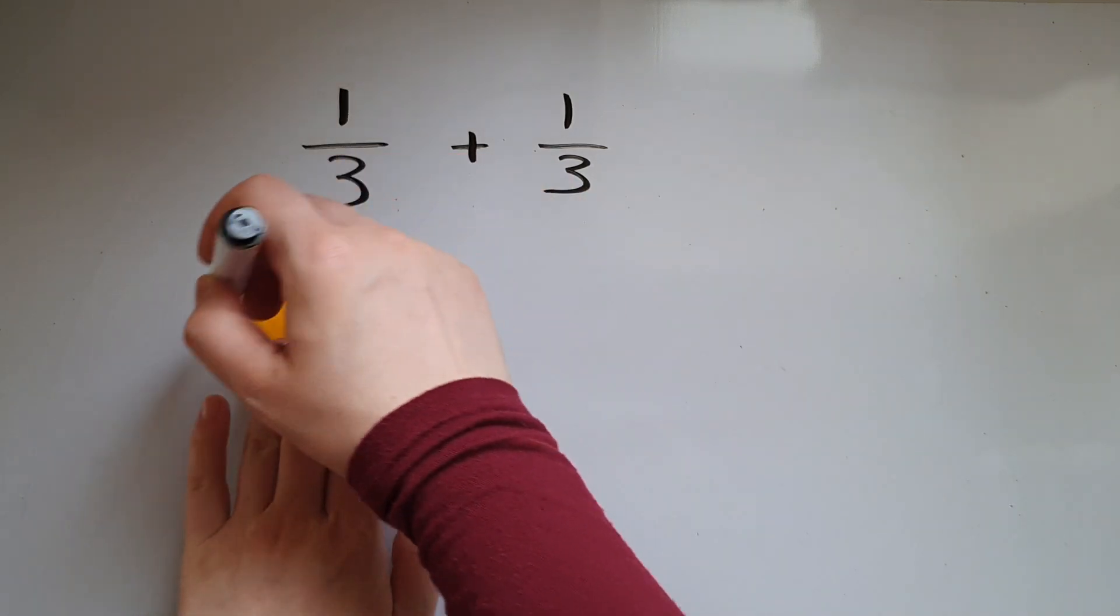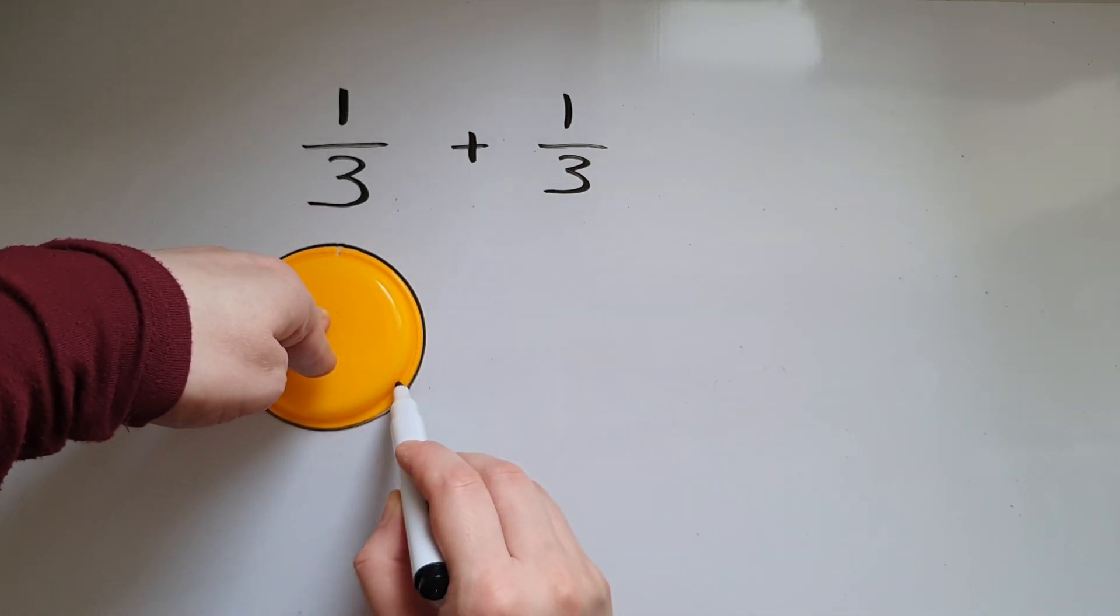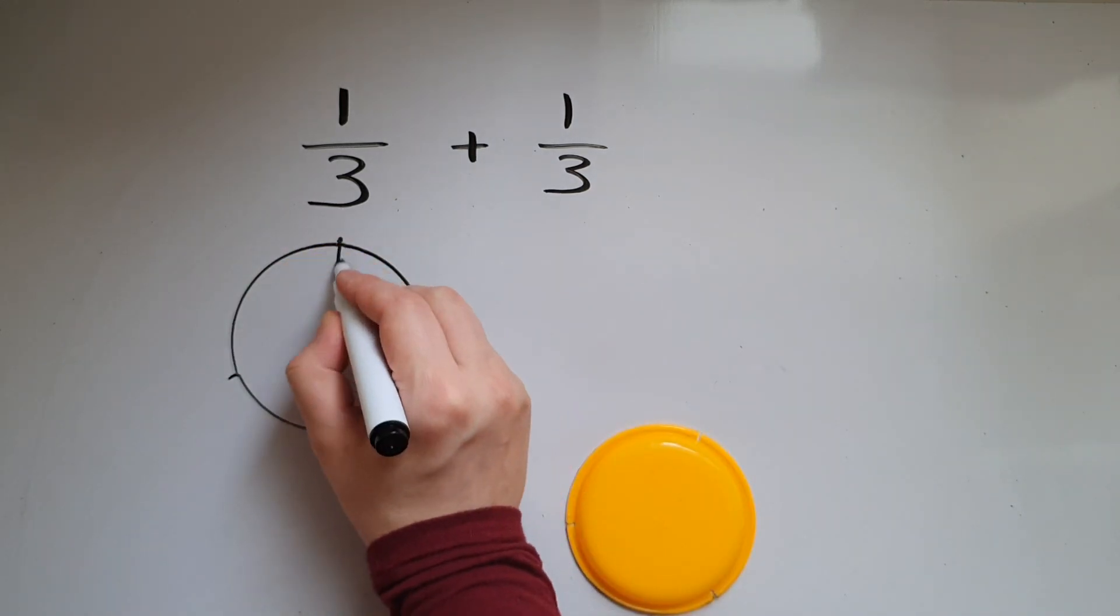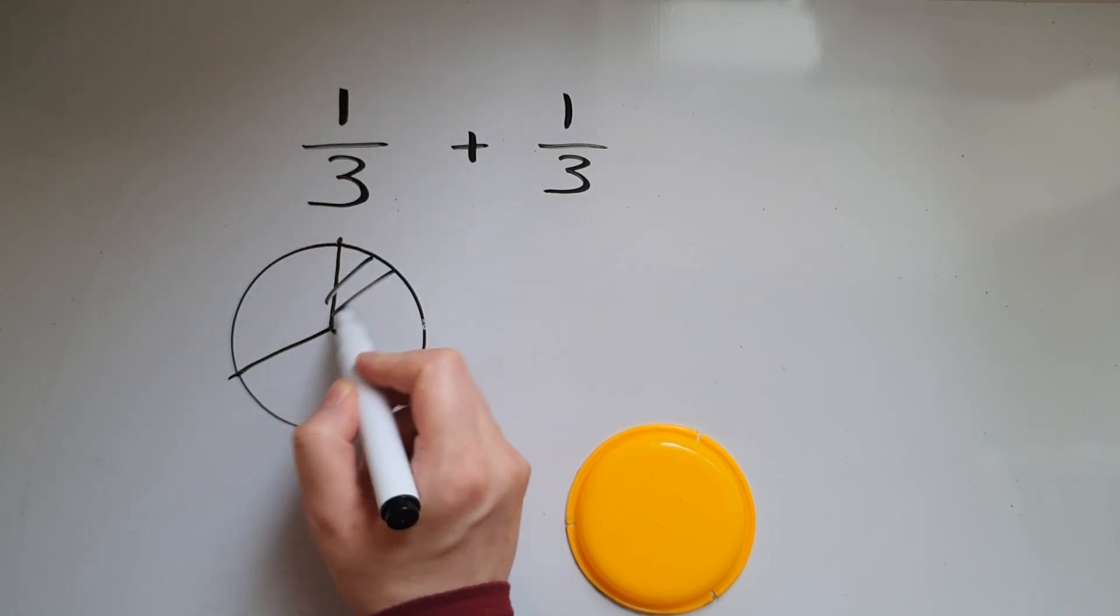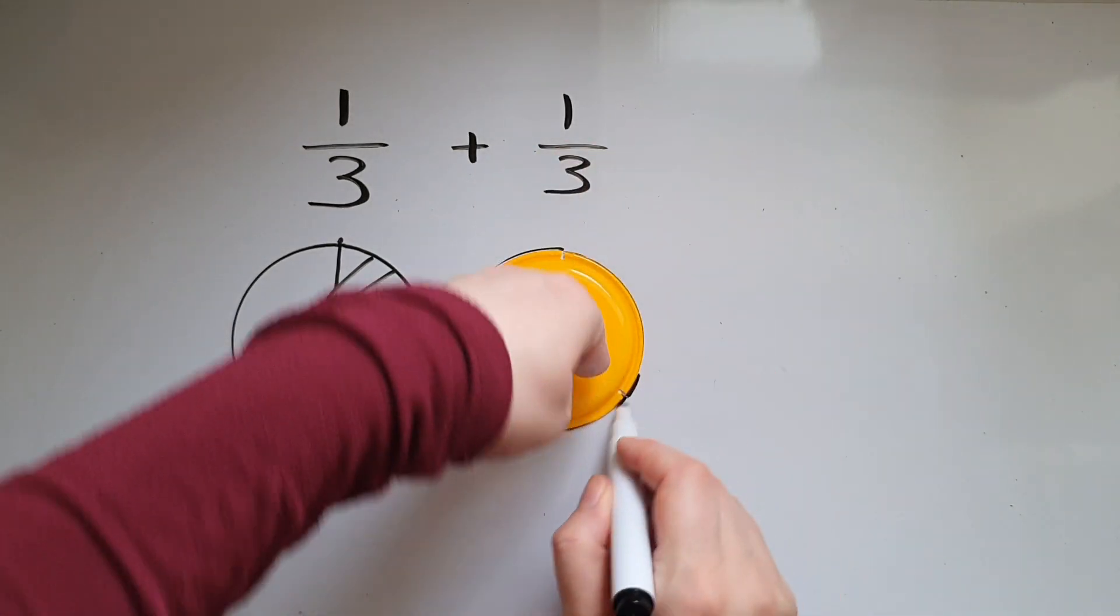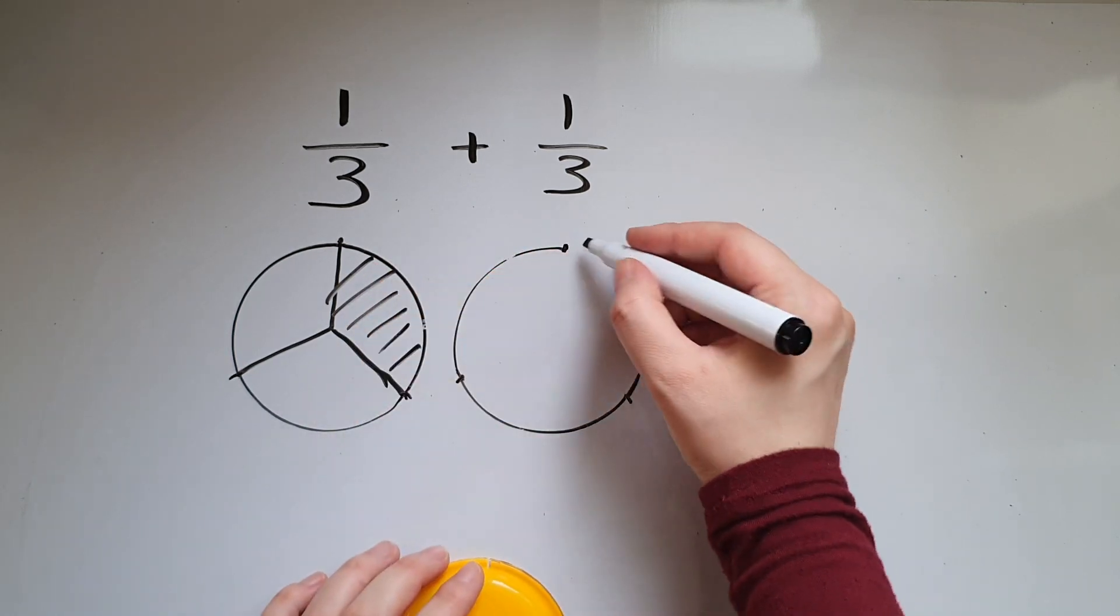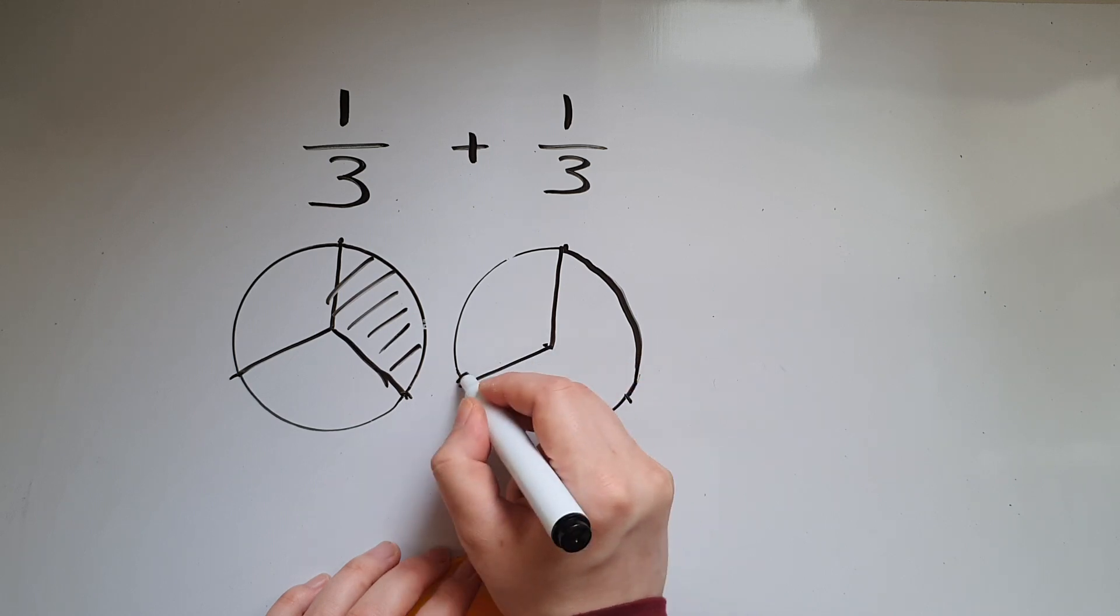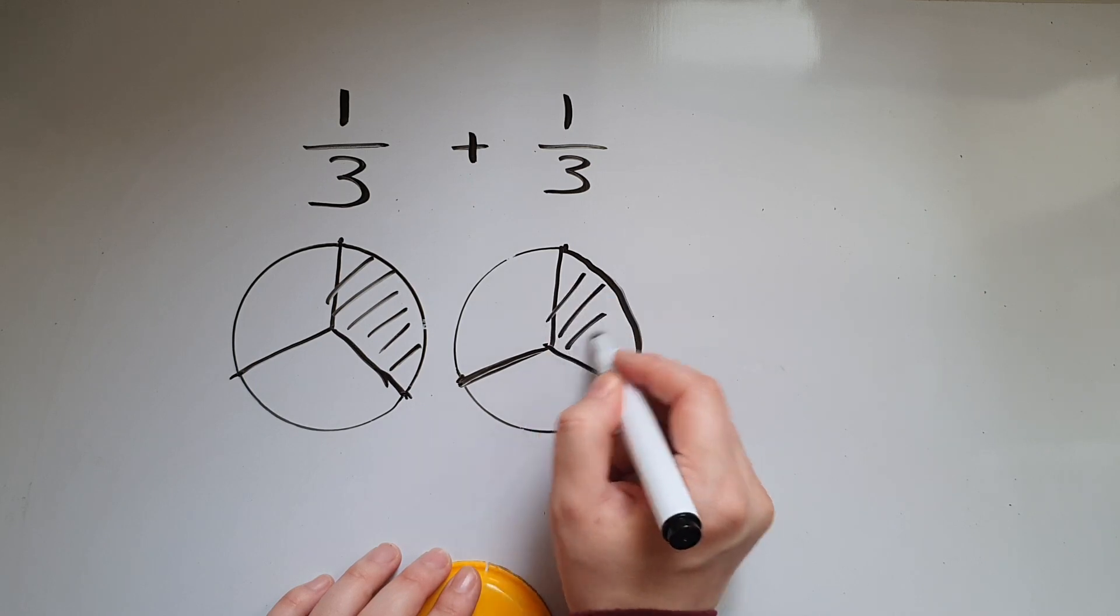So think of a cake that's split into three equal parts, and we're taking one slice and another cake that is identical.